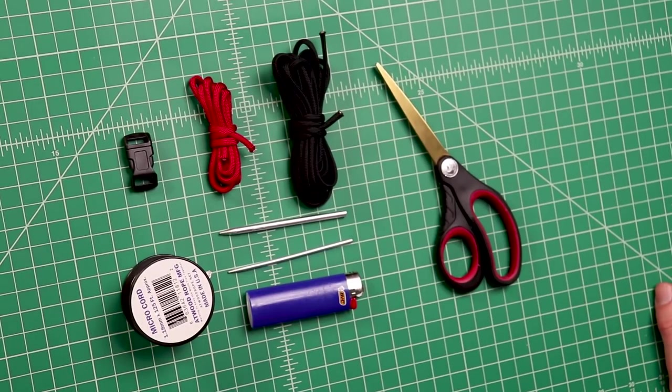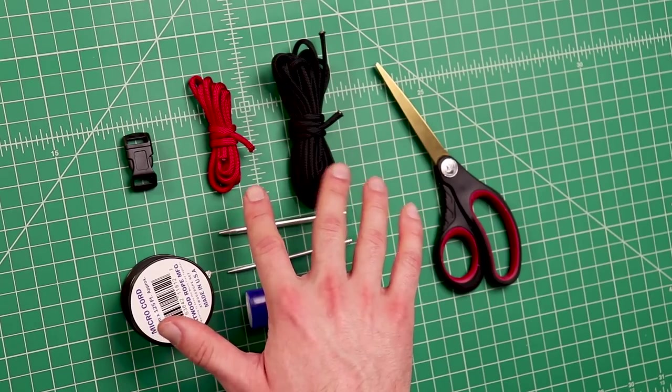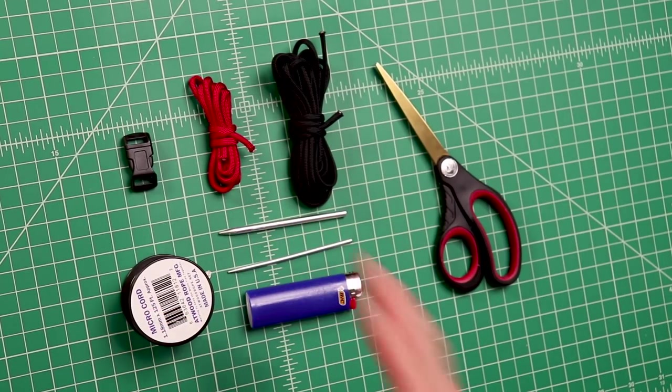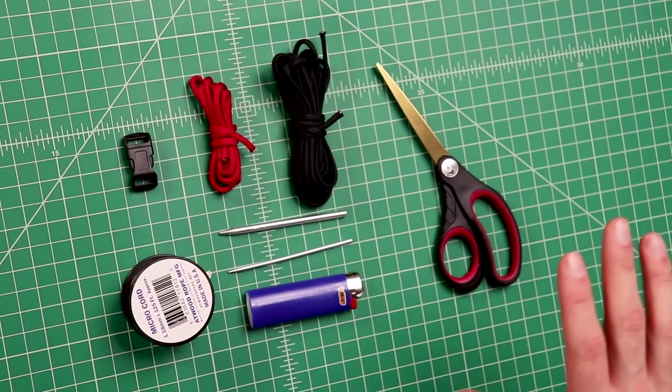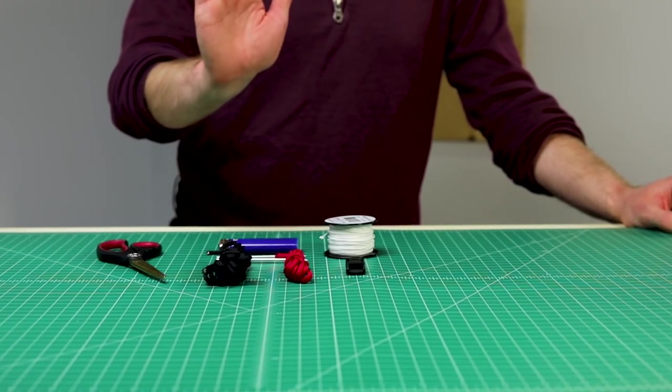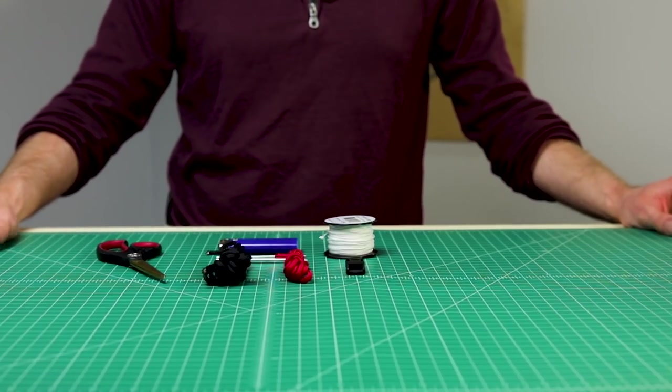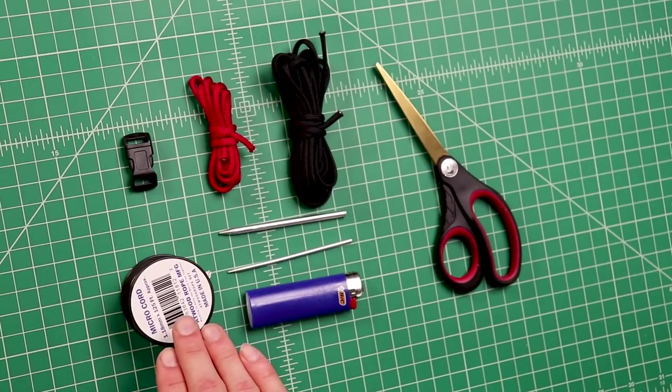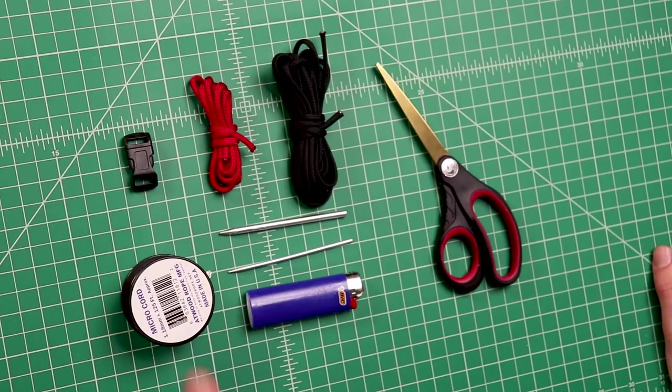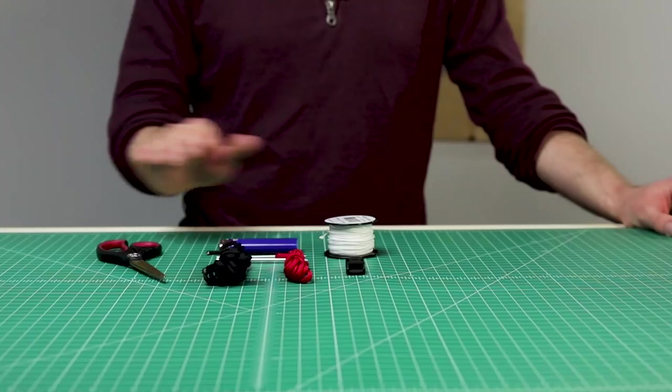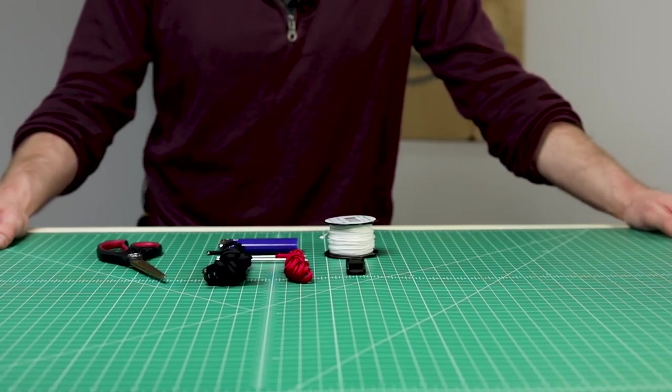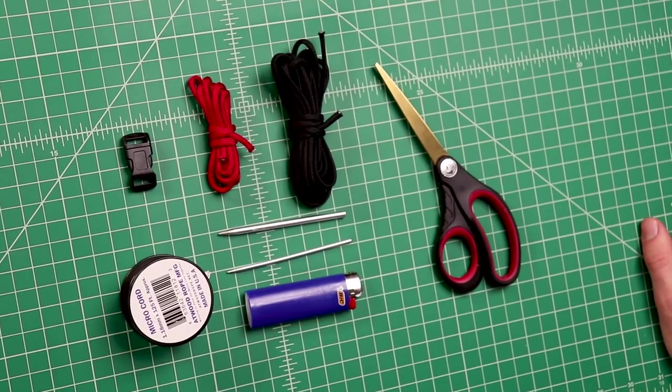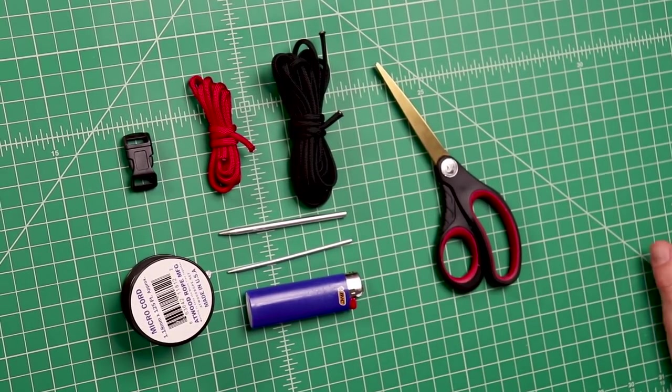For this project you're going to need about two to three feet of your accent cord. I'm using Imperial Red. You'll also need about six to eight feet of your main color, and then another couple feet on top of that for the base of the bracelet, so about eight to ten feet total. I'm using black. You're going to need a buckle. I'm using a half-inch black buckle. You're going to need micro cord. I'm using white. You're going to need about four feet of that. You're also going to need a micro cord fid. And of course for cutting you'll need scissors as well as a lighter.